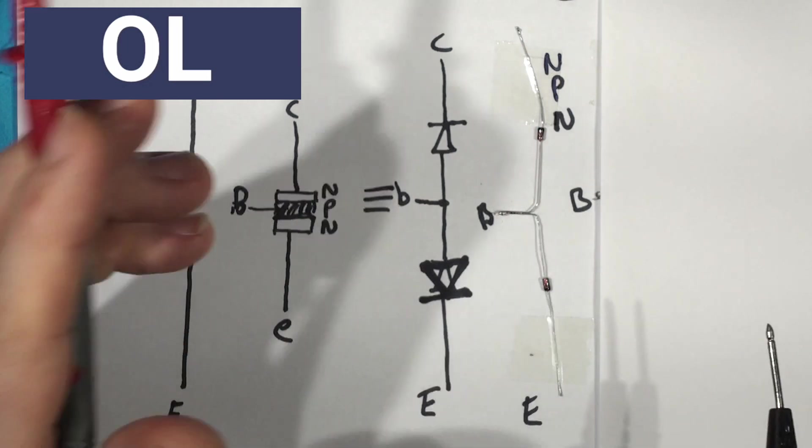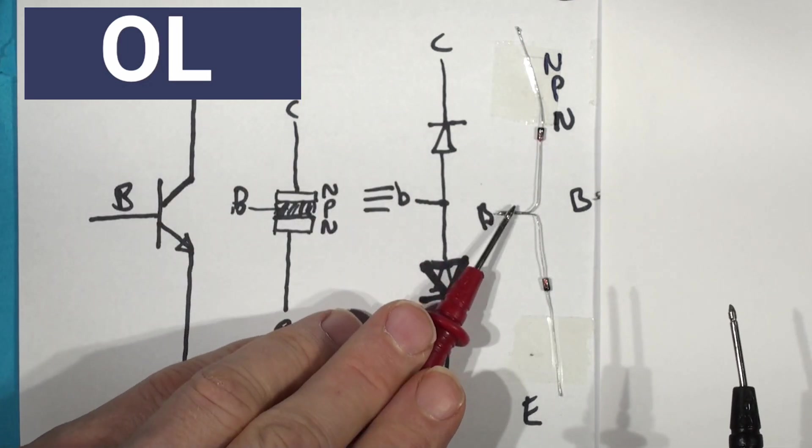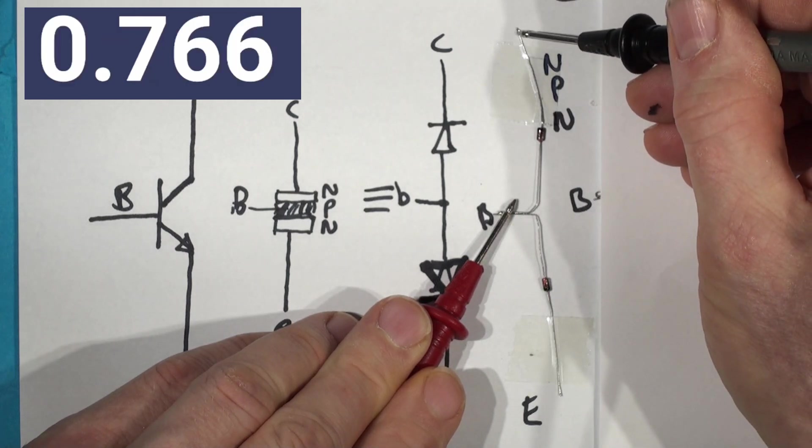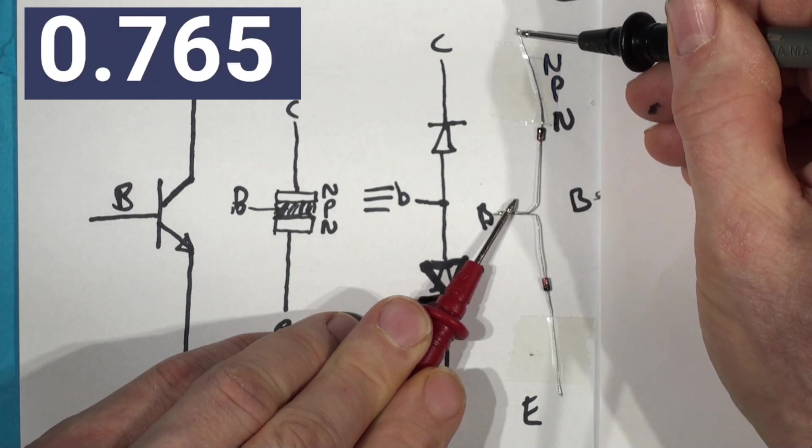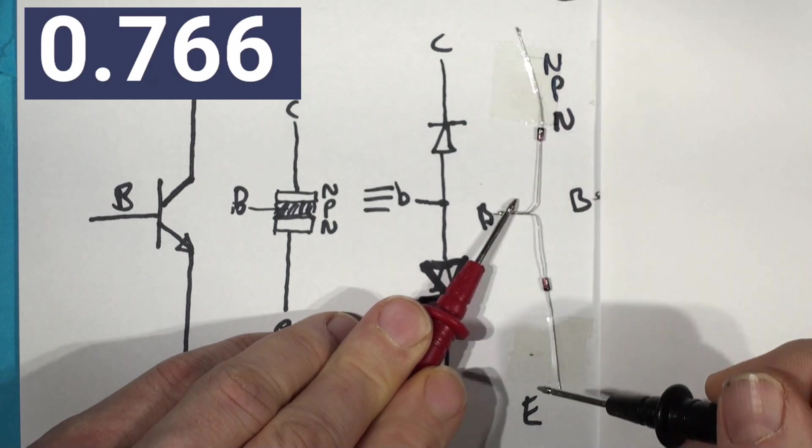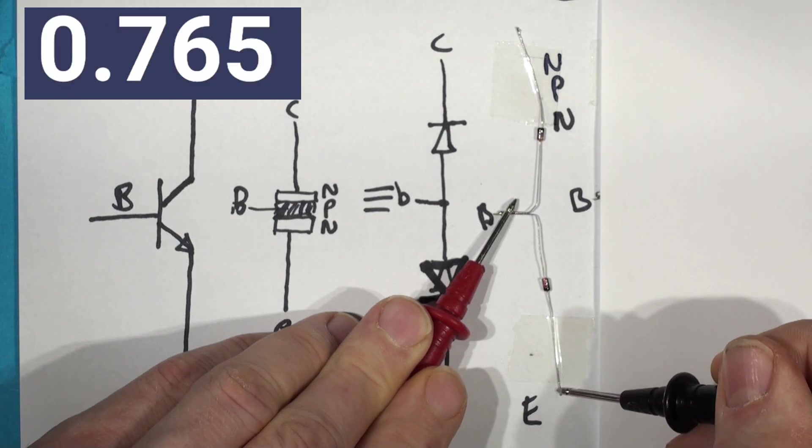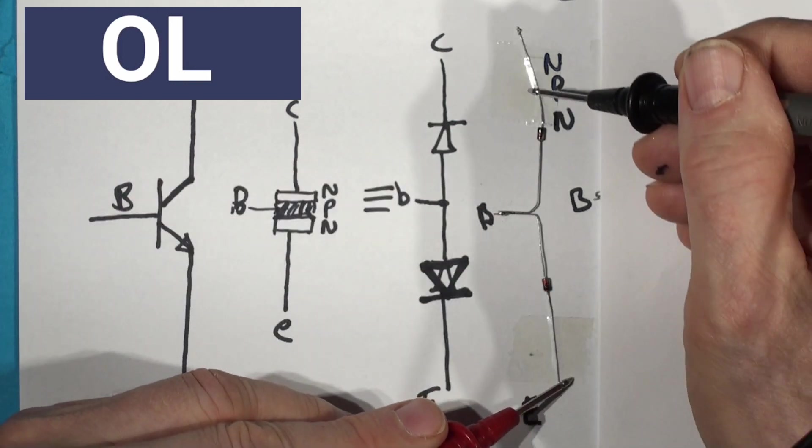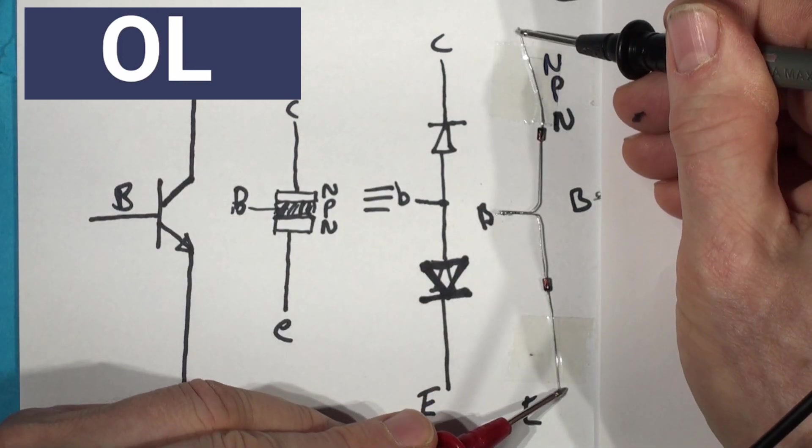So on an NPN transistor, if you take your positive lead, put it on the base, and then check the collector, you'll get roughly about 700 millivolts, between 600 and 750, 770, something like that, as you can see. And then you put it on the emitter, again, you're going to get around the same voltage, maybe slightly less, 765. And then if you meter between these two, there should be nothing. And there isn't.